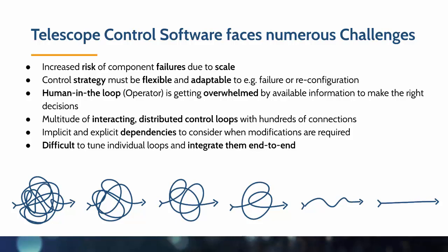The humans in the loop, such as the operator, can get easily overwhelmed by the available information required to make the right operational decisions. On top of that, we have to deal with a multitude of interacting distributed control loops with hundreds of connections, which often have implicit and explicit dependencies that must be considered when modifications are required. And it's quite difficult to tune those individual loops and then integrate them end-to-end so they work seamlessly together.